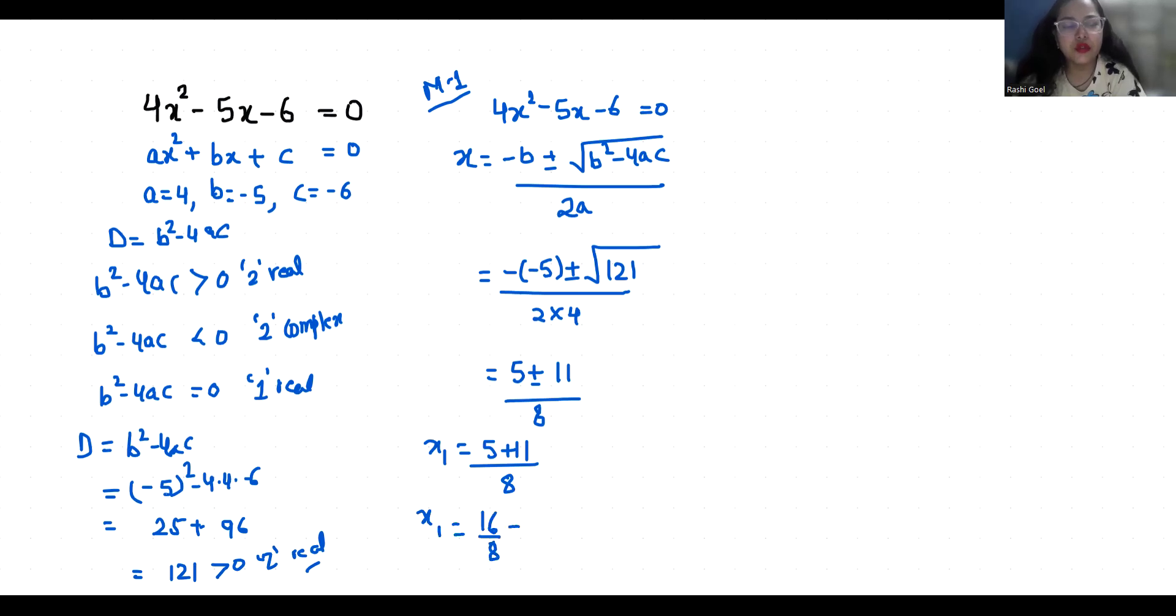One root is 2, and x₂ = (5 - 11) / 8 = -6 / 8 = -3/4. This is our second root.